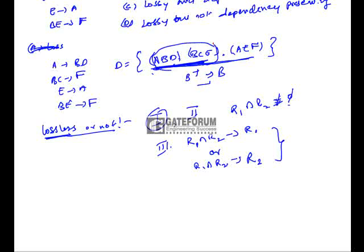Now taking the intersection of BCE and AEF, we get E. E+ derives E, A, and because of A we get B and D, and because of BE we get F. So E+ gives E, A, B, D, F. That means AEF is present in E+, so this condition is satisfied. R1 intersection R2 gives R2 here, where BCE is R1 and AEF is R2. So this condition is satisfied.